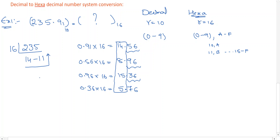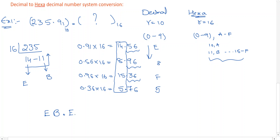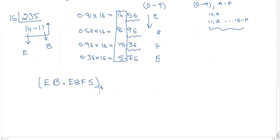For the integer part, 14 is represented as E and 11 is represented as B, so the integer answer is EB. For the fractional part, reading top to bottom: 14 is E, 8 stays as 8, 15 is F, and 5 stays as 5, giving E8F5. So the full answer is EB.E8F5 in base 16.